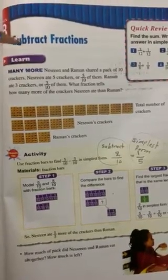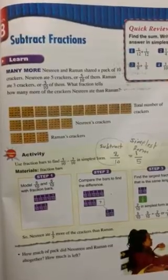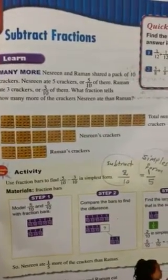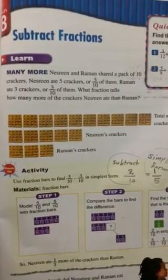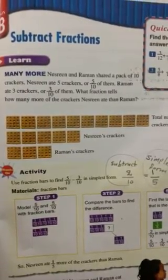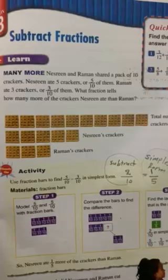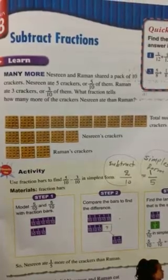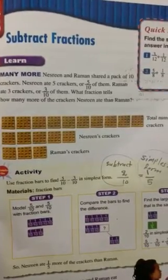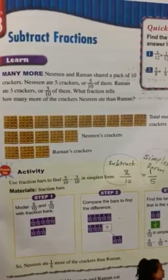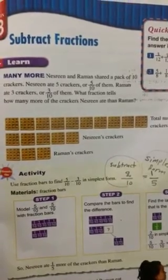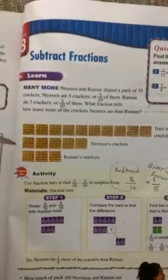As you see in the example here, Nasrin and Raman shared a pack of 10 crackers. Nasrin ate five crackers, or 5 out of 10 of them, and Raman ate three crackers, or 3 out of 10 of them.